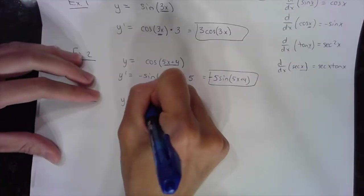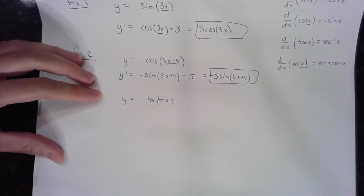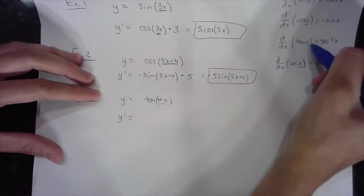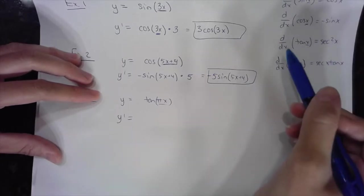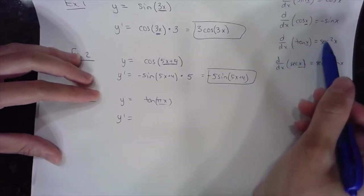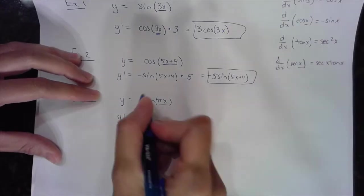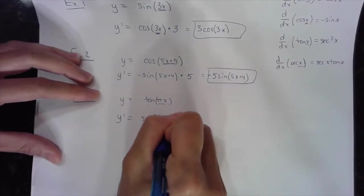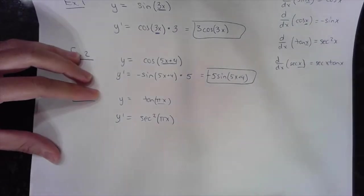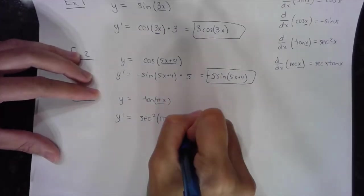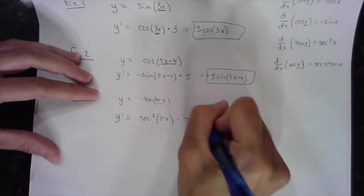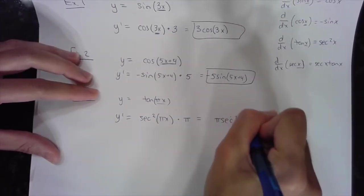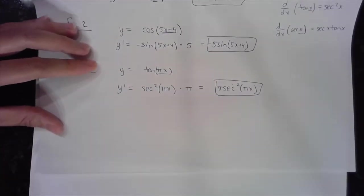Let's do another one: y equals tangent of pi x. Pi is a number, so my angle is pi times x and not simply x. The derivative of tangent of an angle is secant squared of that angle. The chain rule says multiply by the derivative of the angle, which is pi. So my full derivative is pi times secant squared of pi x.